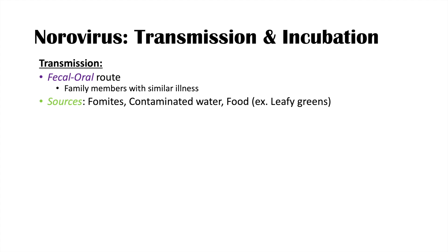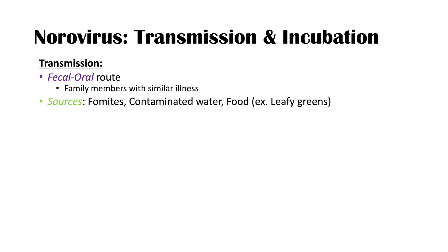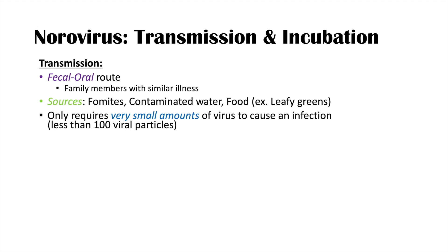Related to contaminated water is also contaminated food supplies, specifically leafy greens. Contaminated water gets onto leafy greens, and if those greens aren't washed properly, the virus can be present on those foods. The norovirus is very virulent — it only requires very small amounts of virus to cause an infection, usually less than 100 viral particles.